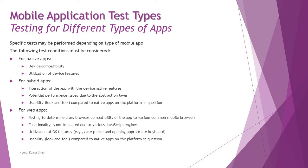For hybrid apps, which work on both the browser and as an app, the key test conditions include interaction of the app with device native features — hardware and software — and potential performance issues due to abstraction layers. Passing through an abstraction layer to reach the web portion can impact performance.